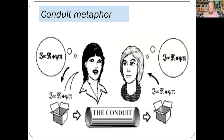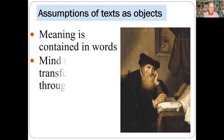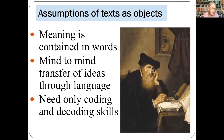This lies behind the conduit metaphor. Basically, the lady with fair hair has an idea, puts it into words, sends it through the conduit — which is writing — and the lady with dark hair receives the words and, magically, gets the same idea. So meanings correspond with words and writing reflects meanings rather than creating them. Meanings can be written down and understood by anyone with the right encoding and decoding skills. A text says everything that needs to be said, with no conflicts of interpretation and no different understandings.